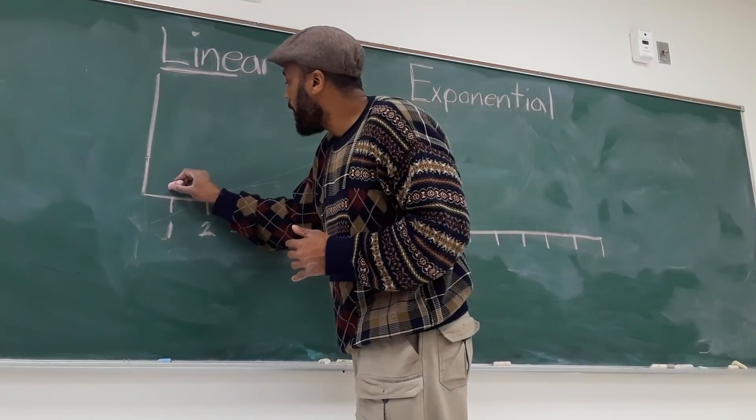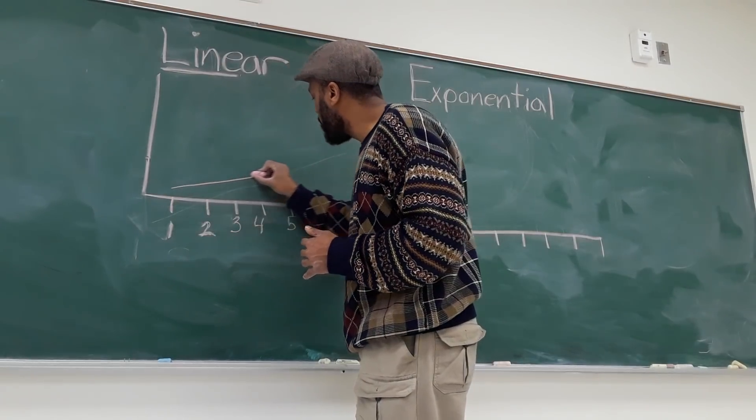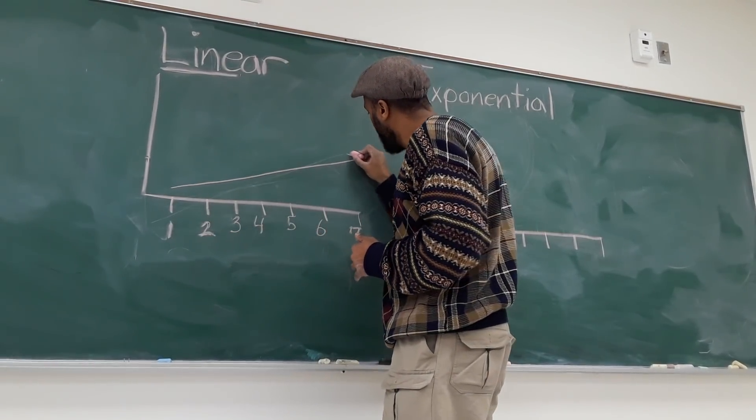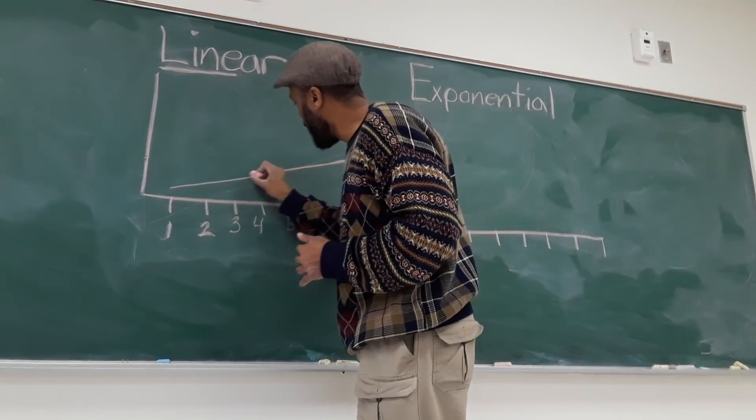So if you wanted to draw a linear growth model, it looks just like this. A straight line.